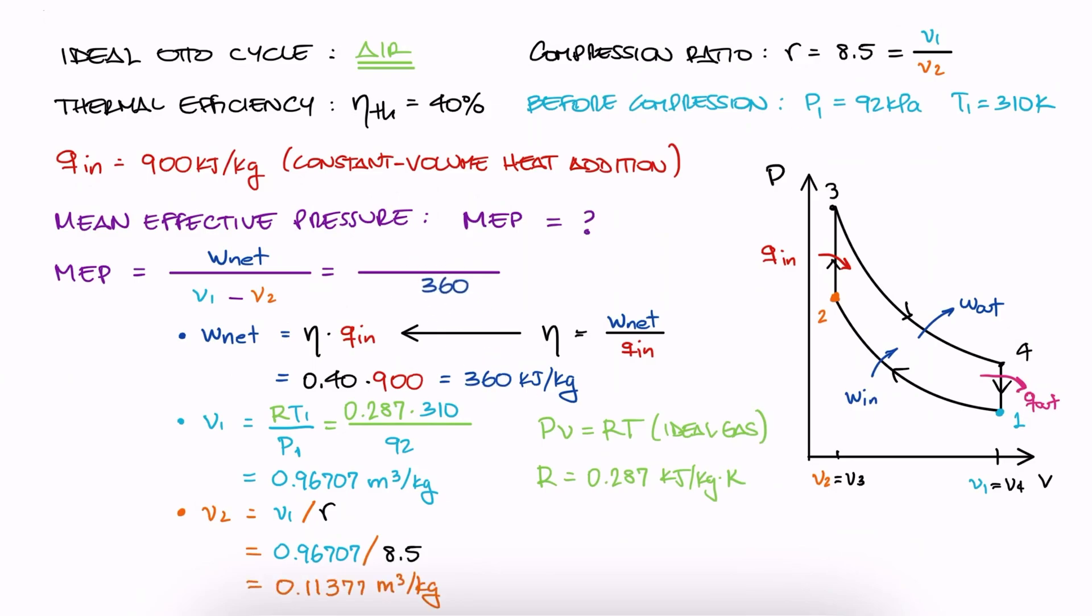We substitute all three values we just found, and we find the value for the mean effective pressure for the cycle. And that's it.